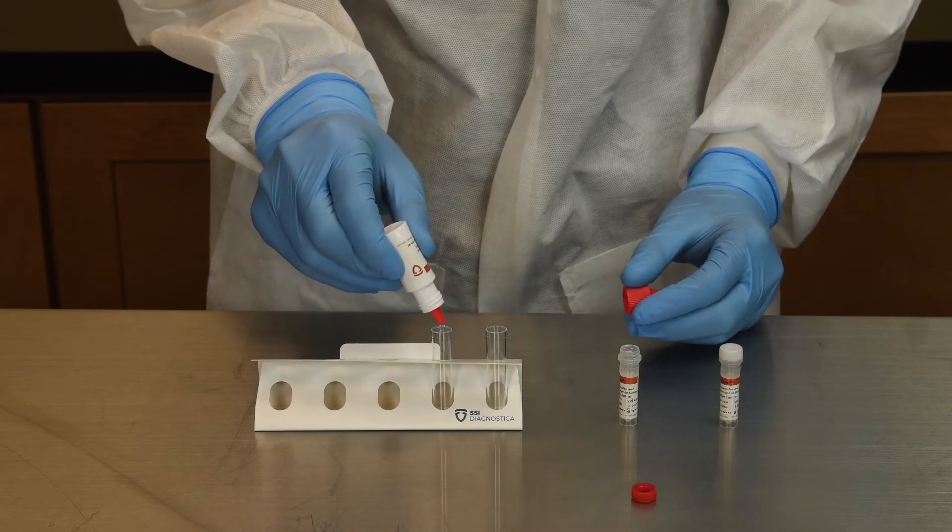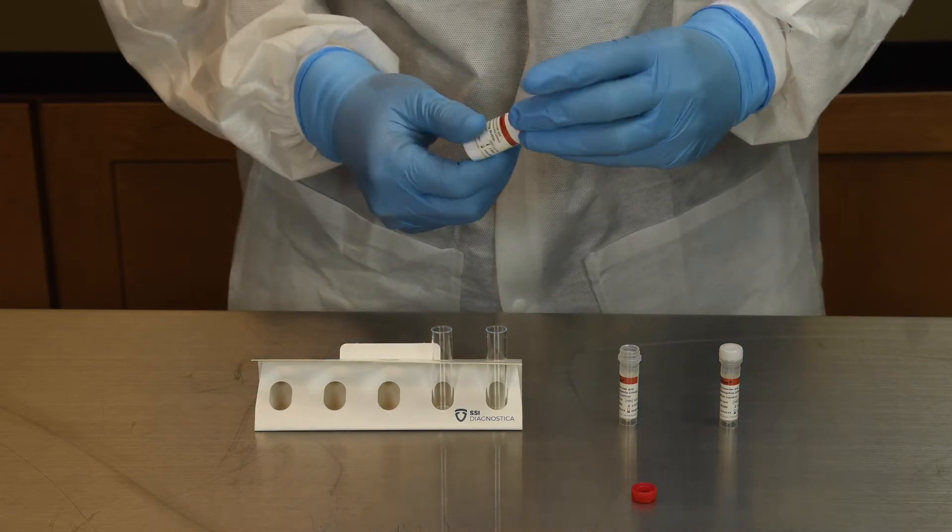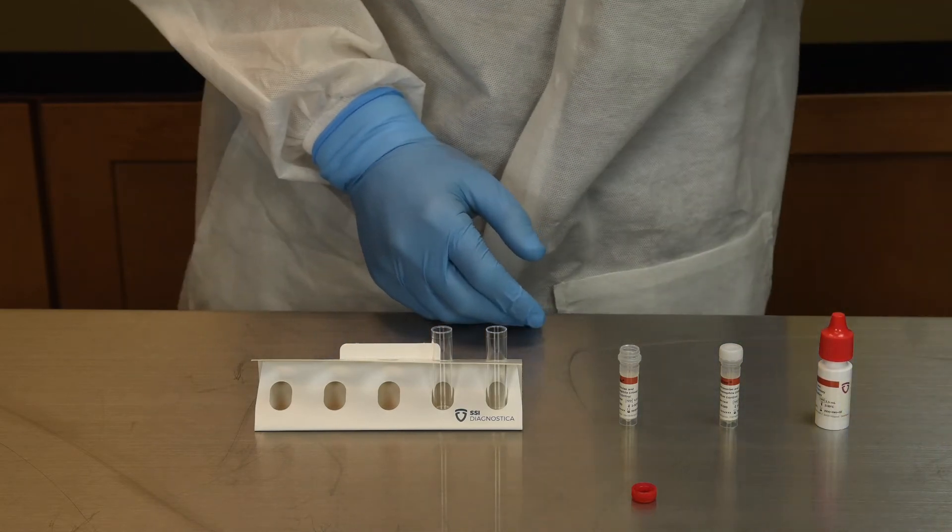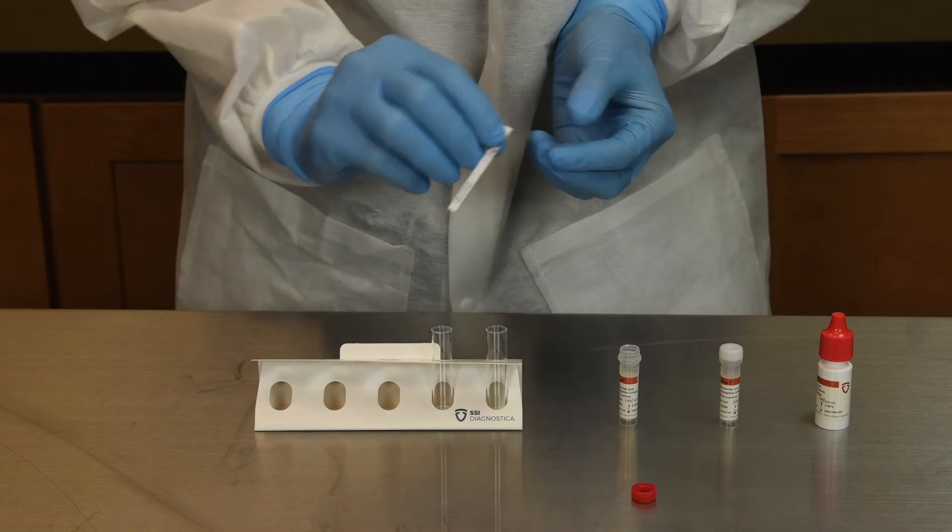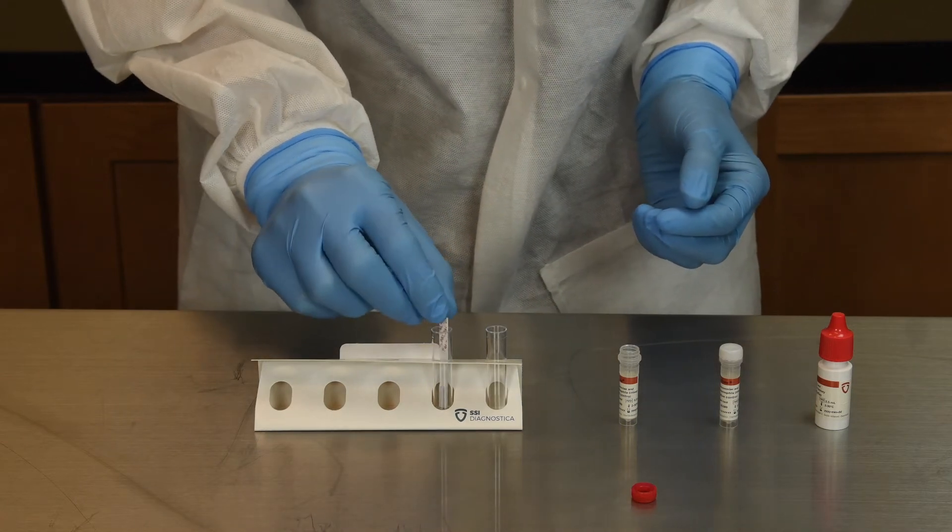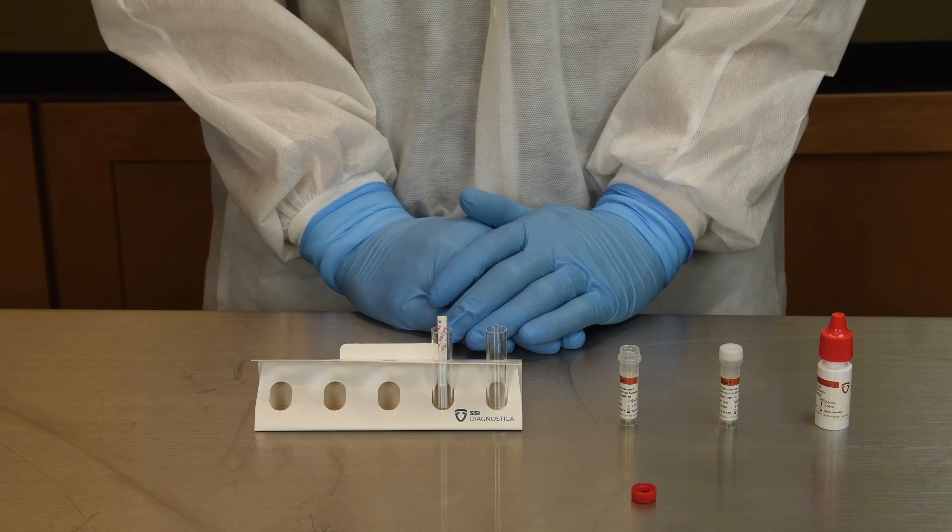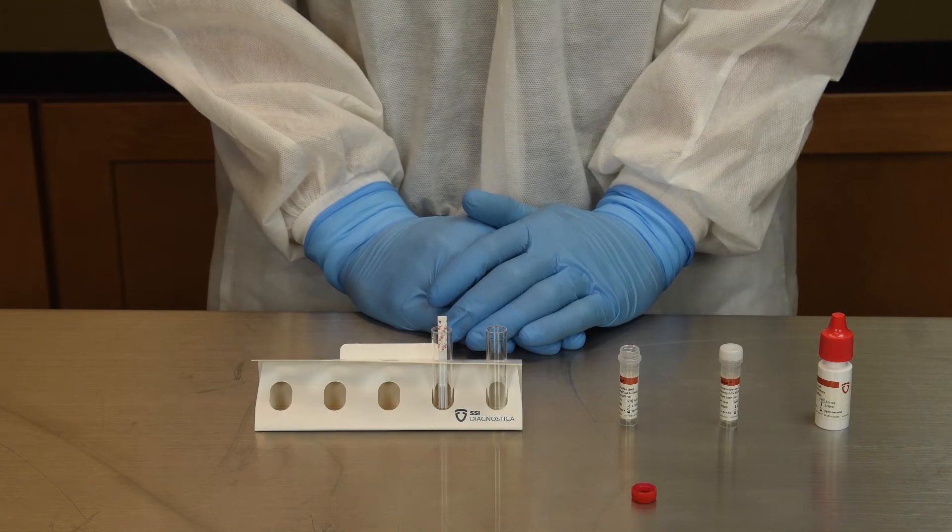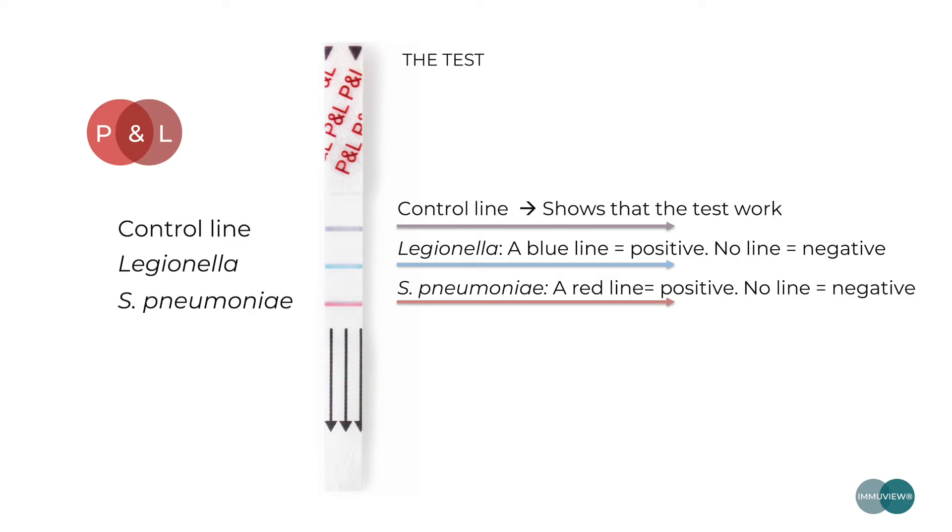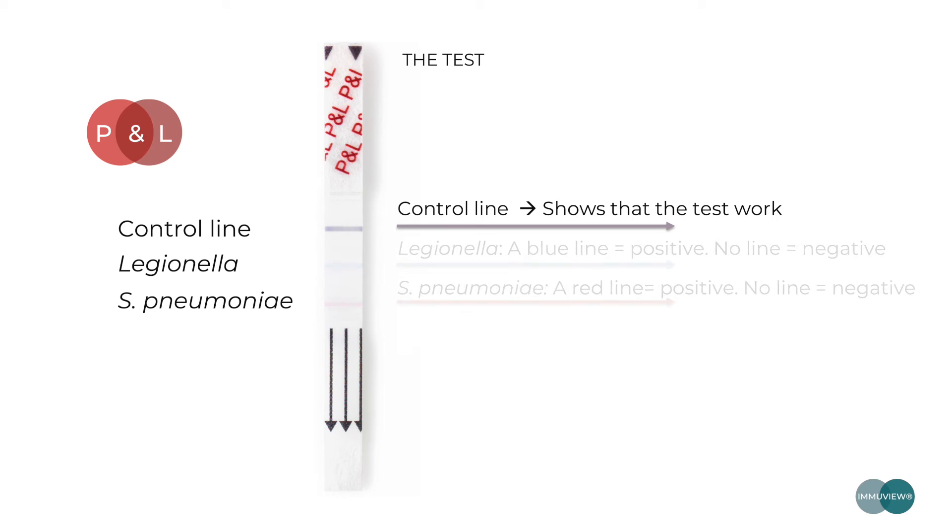The procedure for running a positive or negative control is identical to running a patient sample. Quality control should be performed in alignment with the product's instructions for use and your laboratory's internal quality control procedures. The positive control will show test lines for S. pneumoniae and L. pneumophila. The negative control will only show the control line.